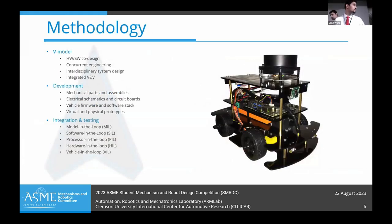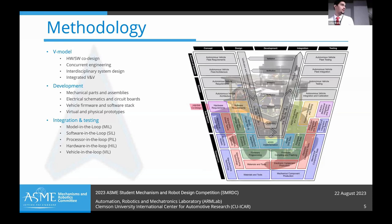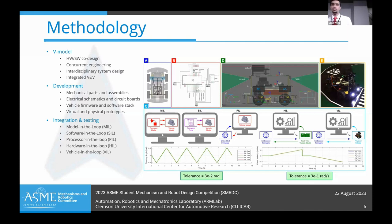Coming to the methodology, we designed and developed this prototype by adopting the mechatronics V model, which helped us to co-design hardware and software components in a concurrent engineering framework. We developed a virtual prototype and physical prototype, and performed X-in-the-loop testing from model in the loop all the way up to vehicle in the loop, validating the design and performing optimization at every step to meet specified tolerances.